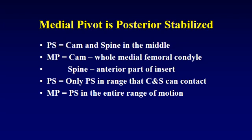So the medial pivot is a posterior stabilized knee. A posterior stabilized knee is posterior stabilized because there's a cam and spine, mostly in the middle of the knee, and the exact design differs manufacturer to manufacturer. The medial pivot knee uses the whole medial femoral condyle as the cam and the anterior part of the insert as the spine. Thus, the posterior stabilization has been moved from the middle of the knee to the medial compartment, more appropriately stabilizing the knee on the medial side. For the standard posterior stabilized knee, only post and cam contact — usually starting around 40 or 50 degrees — provides anterior-posterior stability. But for the medial pivot, it is posterior stabilized over the entire range of motion. The medial pivot is a posterior stabilized knee, posterior stabilized in the medial compartment, and we believe that this translates to better patient sensation. Thank you.